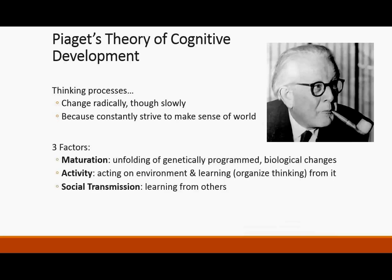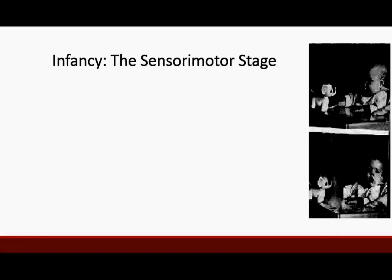Piaget identified three factors in cognitive development. First, maturation — the unfolding of genetically programmed biological changes, the biological factor. Second, activity — acting on our environment, interacting with it, and learning to organize our thinking from it. Third, social transmission — interacting with other humans. Piaget talked about four stages: sensorimotor, pre-operational, concrete operational, and formal operational, covering birth through adulthood.